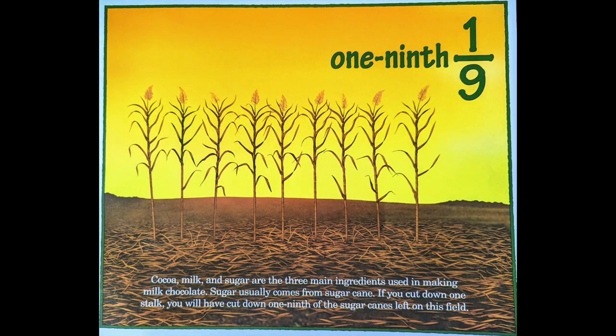One ninth. Cocoa, milk, and sugar are the three main ingredients used in making milk chocolate. Sugar usually comes from sugar cane. If you cut down one stalk, you will have cut down one ninth of the sugar canes left on this field.